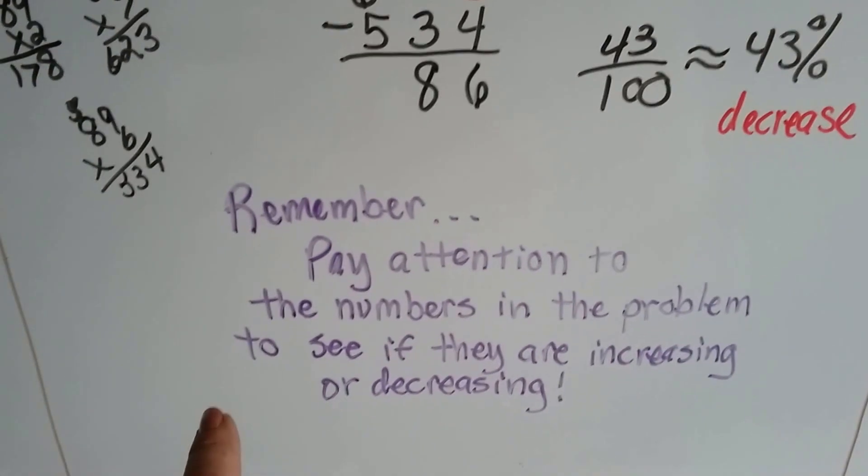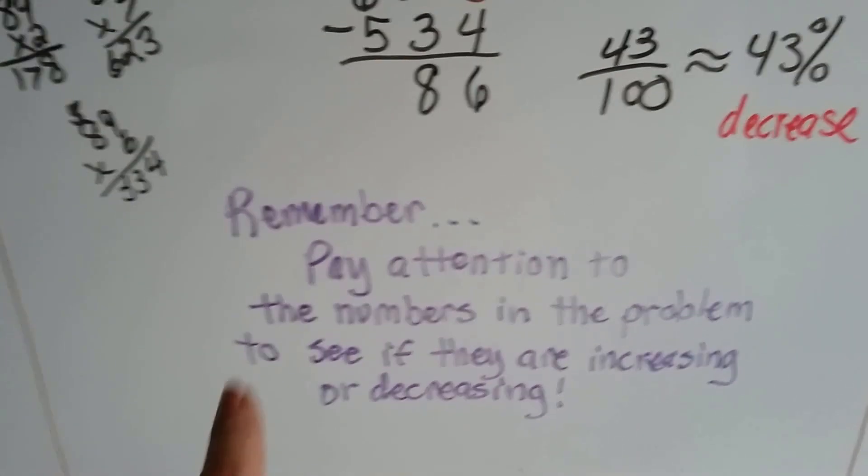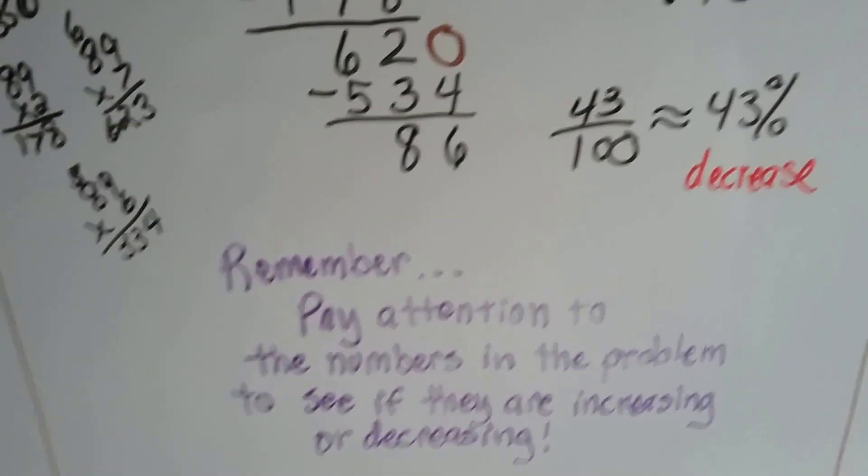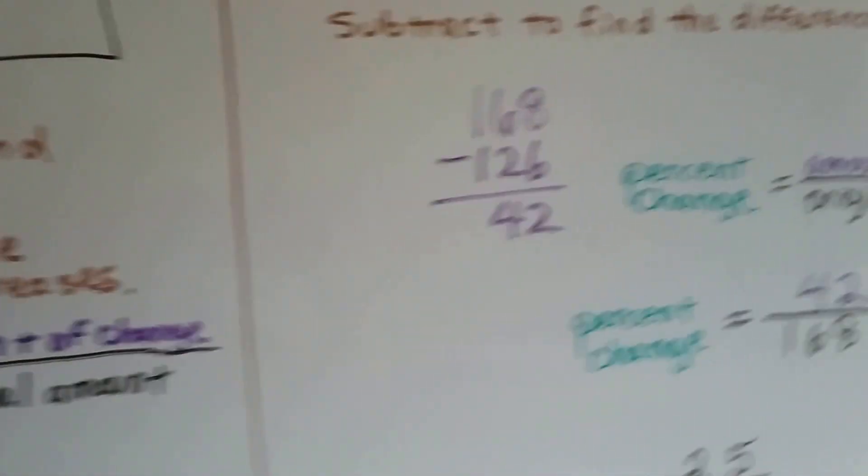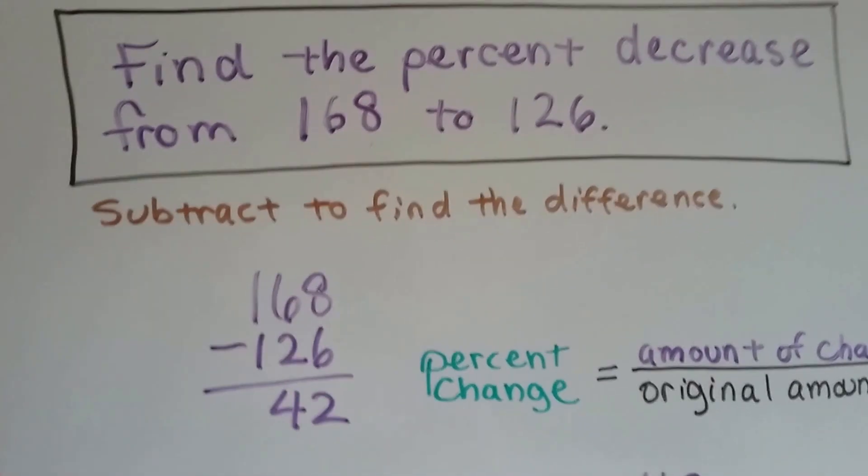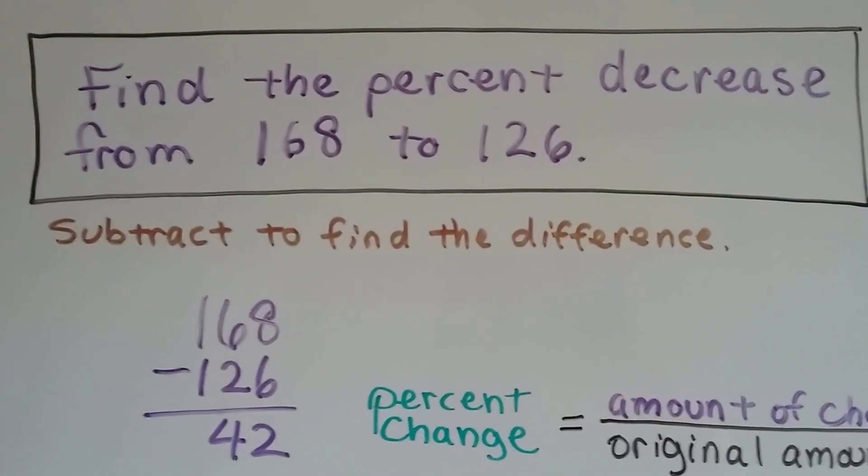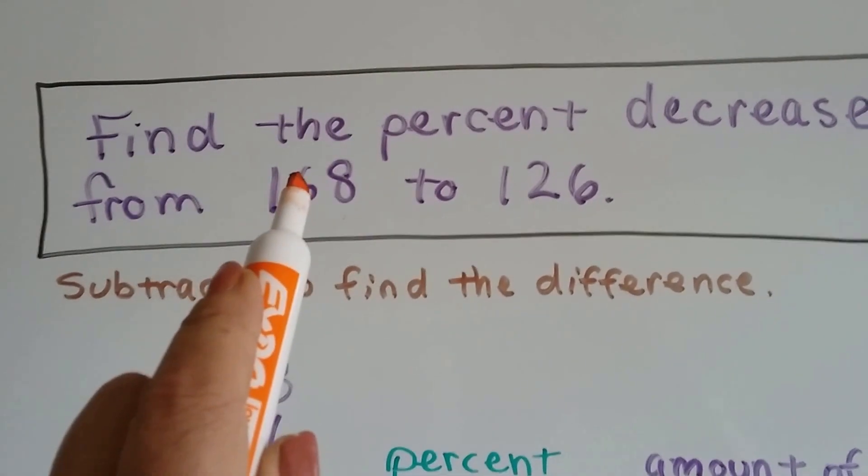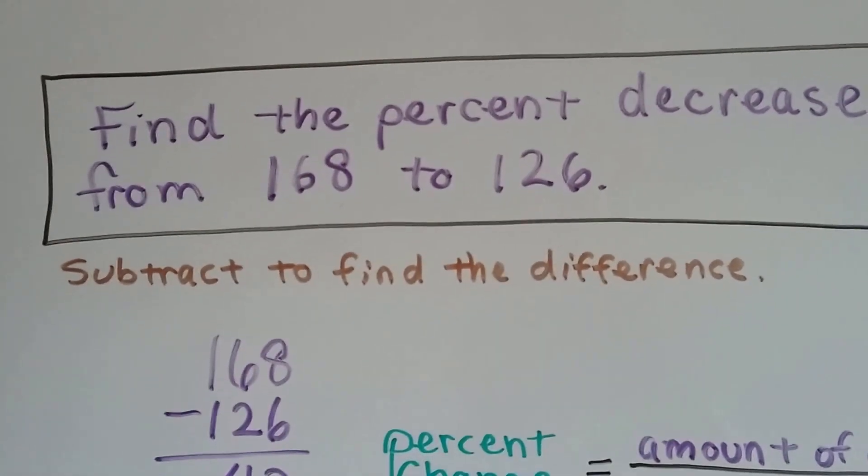So remember to pay attention to the numbers in the problem to see if they're increasing or decreasing. Because we're using the same formula, the same equation. You want to label your problem that it was a decrease, not an increase. So find the percent decrease from .168 to .126. Because we can see this is a bigger number, we see it's decreasing.